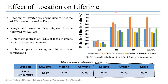Here we will see the effect of location on the lifetime of the inverter. Figure 8 shows the location-based relative lifetime for different inverter topologies, normalized to the lifetime of the full bridge inverter located at Kenya. Considering all inverter topologies, we can clearly see that Kenya and Amazon face the highest damage, followed by Kolkata. These three locations are near the equator and hence face higher thermal stress on the power semiconductor devices. Table 1 shows the average mean temperature over the year for all locations, and we can clearly observe that Kolkata, Amazon, and Kenya have higher mean temperatures, which leads to higher mean values of junction temperature.